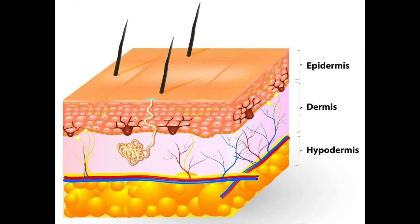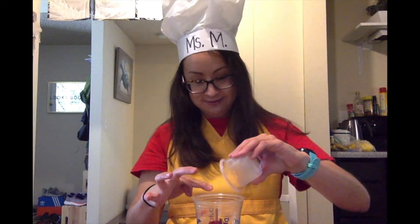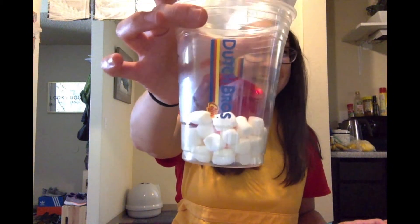On top of the hypodermis is the dermis — a thick layer of fibrous and elastic tissue, mostly made of collagen and a small component of elastin. This gives the skin its flexibility and strength. The dermis contains nerve endings, sweat glands, oil glands, hair follicles, and blood vessels. To represent the dermis, I will use jell-o. There is your dermis.